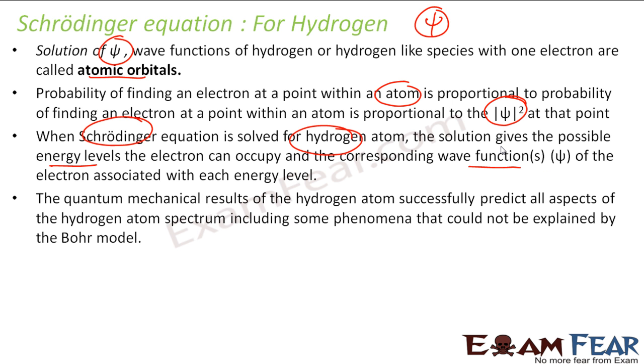We will discuss about the orbitals now. And the quantum mechanical results of hydrogen predicts all aspects of hydrogen atom spectrum, including something which is not done by Bohr model. For example, Zeeman effect, Stark effect. So this guy, quantum model, explains everything about hydrogen.